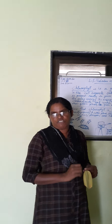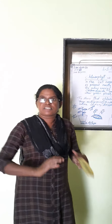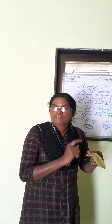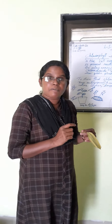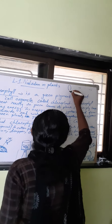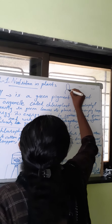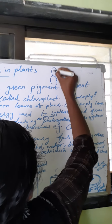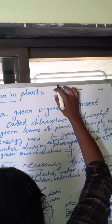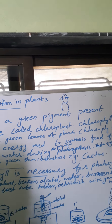Some plants do not have green leaves — for example, the cactus plant. The cactus plant has no leaves, only stem and branches. So where does that plant make its own food? In the cactus, the stem and branches are the green parts, and that green part makes their own food.